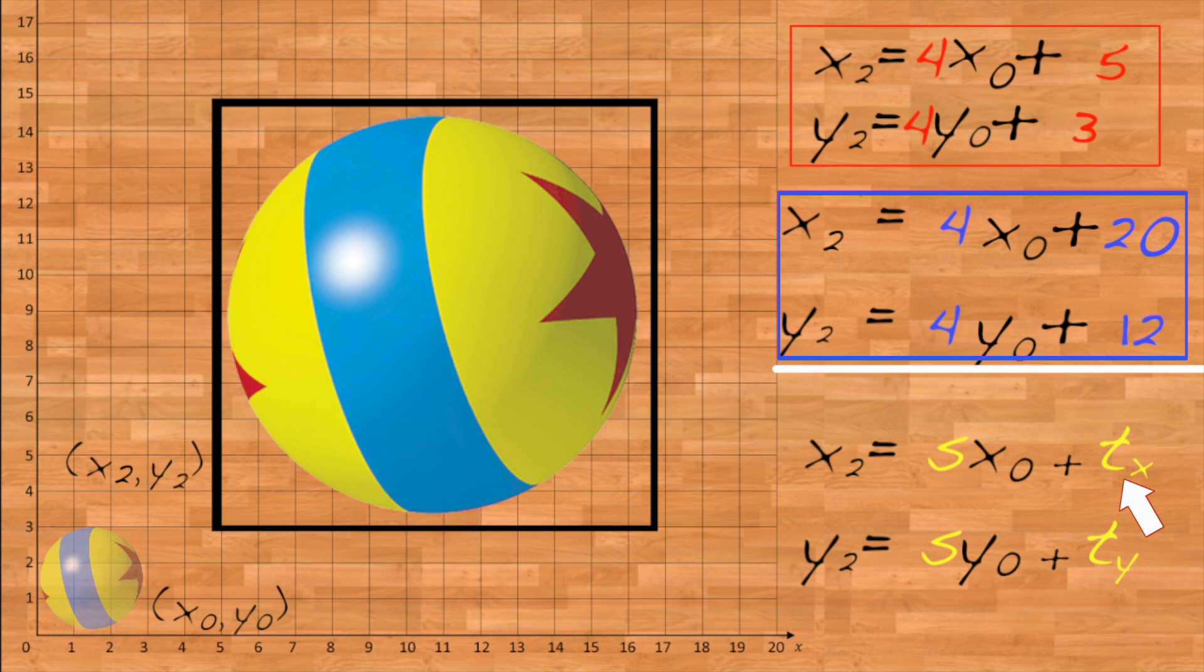Where tx stands for the effective, or final, translation amount in x, and ty is the effective translation amount in y.